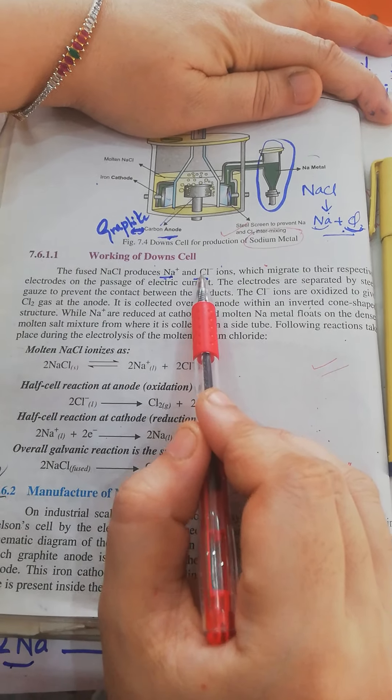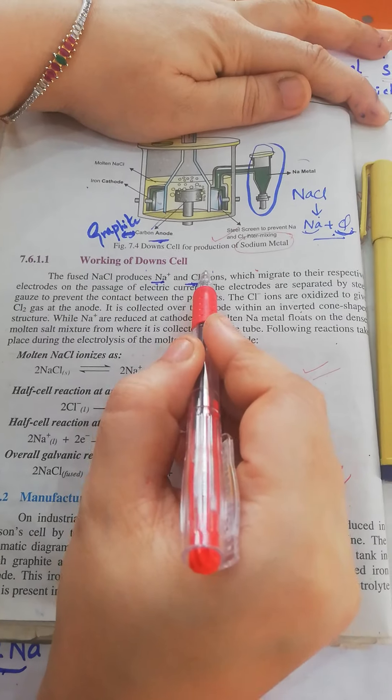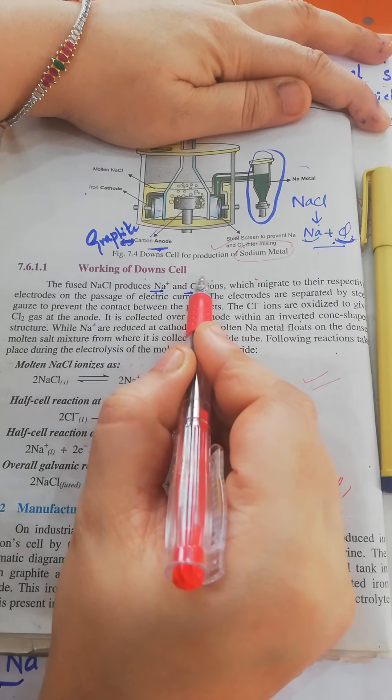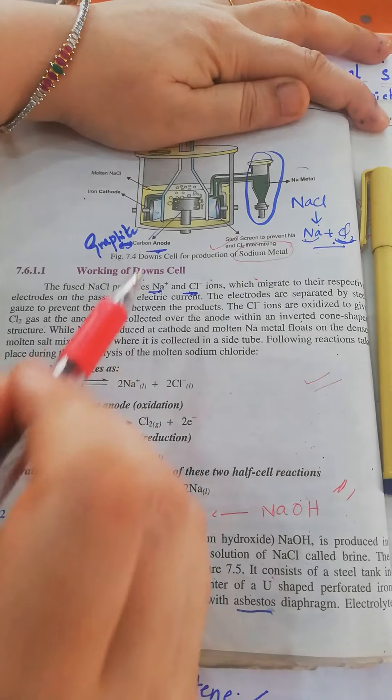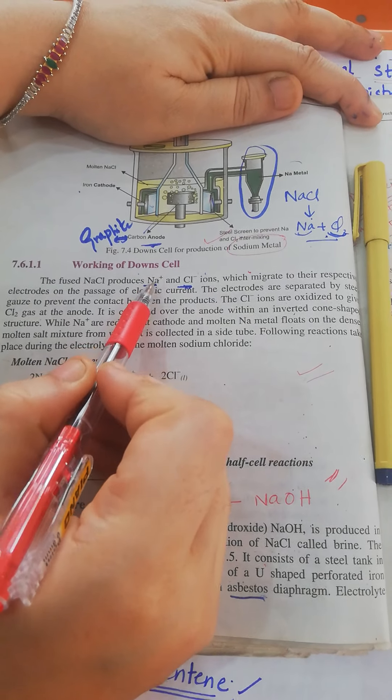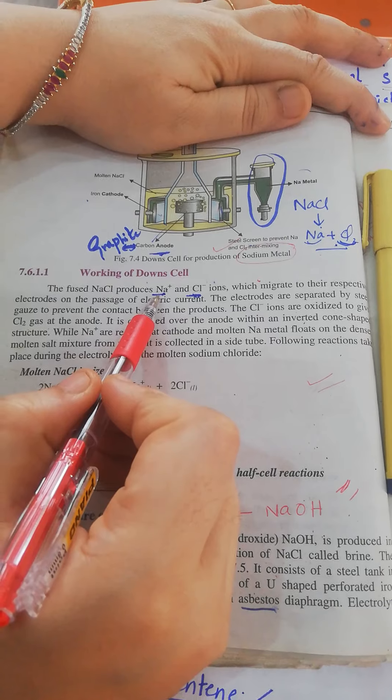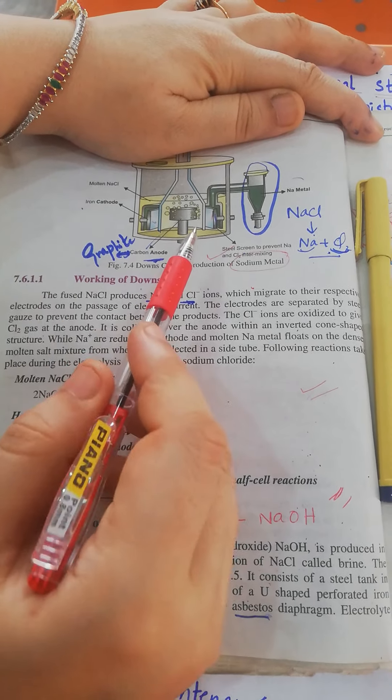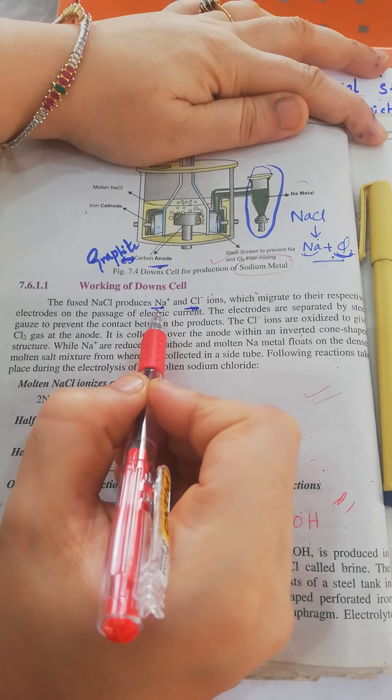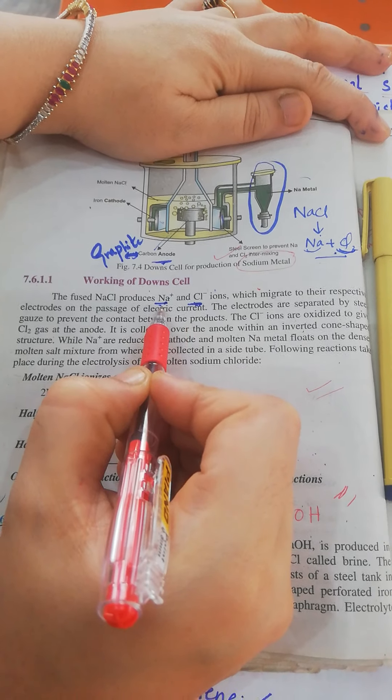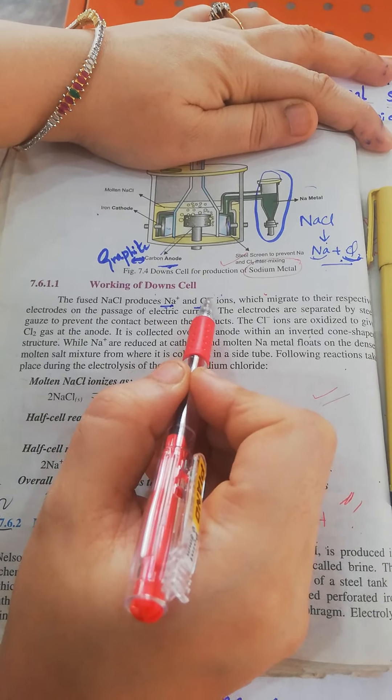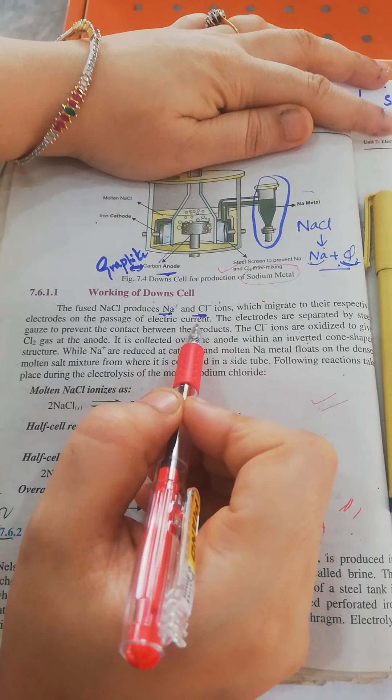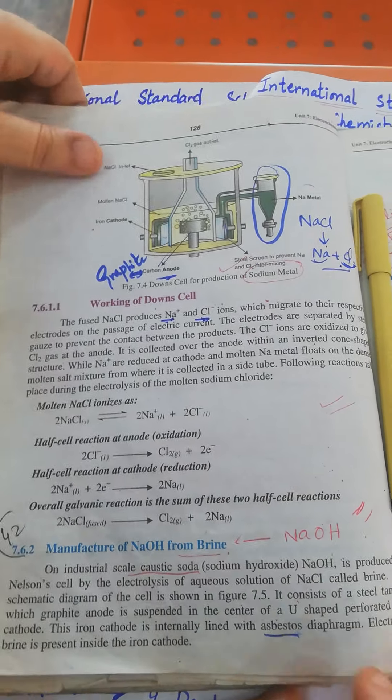The ions move towards their respective electrodes. Chloride, with its negative charge, and sodium, with its positive charge, move to their respective electrodes where they discharge. The reactions will now be discussed.